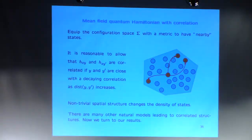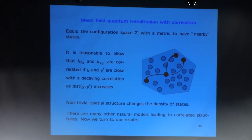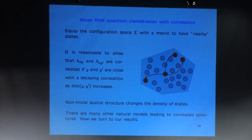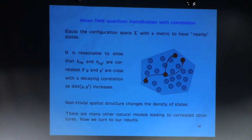Let me spend one more slide on the physical motivation for studying correlated matrices. Last time I mentioned that we also have theorems when we drop the condition that the matrix elements are independent. We still need some kind of control on the correlation, and the type of correlation we used, described in a theorem mentioned last time, is a specific type.